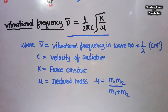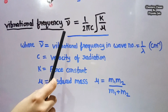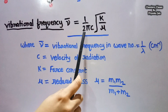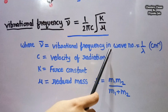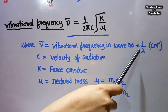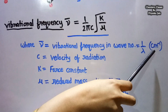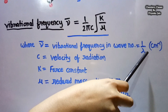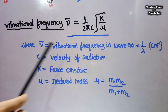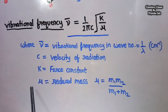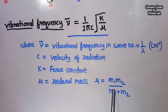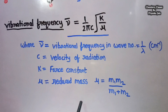The vibrational frequency of such vibrations is given by Hooke's law: ν̄ = (1/2πc)√(k/μ), where ν̄ is the vibrational frequency in wave numbers (equal to 1/λ, with units of cm⁻¹), c is the velocity of radiation, k is the force constant, and μ is the reduced mass, given by μ = m₁m₂/(m₁ + m₂). Using this formula, we can easily calculate the vibrational frequency of any vibration.